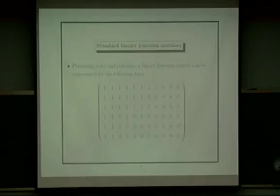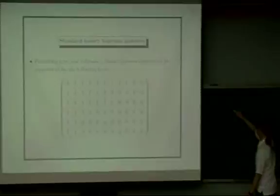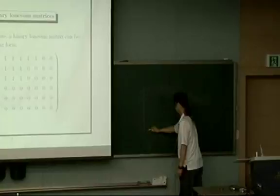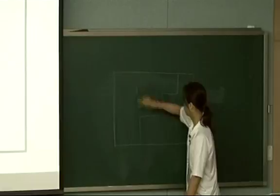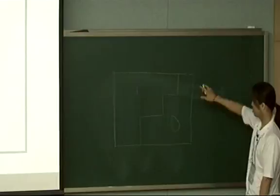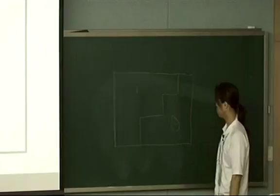We can arrange it into this kind of form. So if you just consider the positions of ones here, it is a grid — this kind of one. If you know about partitions, it is exactly the form of a partition. But there is one difference: we permuted rows and columns, so to determine this standard form, we have to determine the indices of rows and columns.